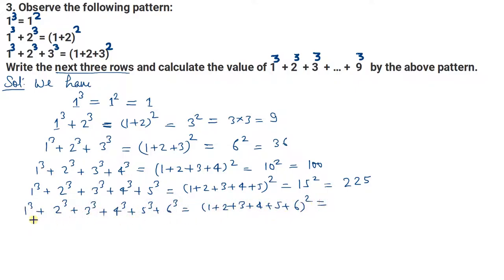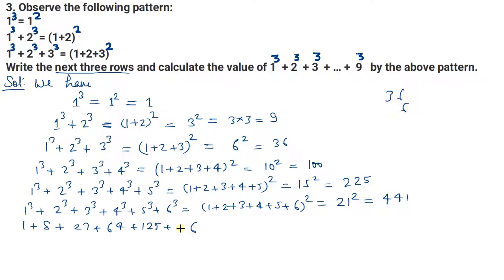Next row: 6 natural numbers तक cube करके add करें। 1+2+3+4+5+6 = 21, और 21 का square = 441. Verification: पहले तक 225 आया था, उसमें 6 का cube यानी 216 add करेंगे — 225+216 = 441. यहाँ भी 441 है, तो definitely यह pattern follow हो रहा है।